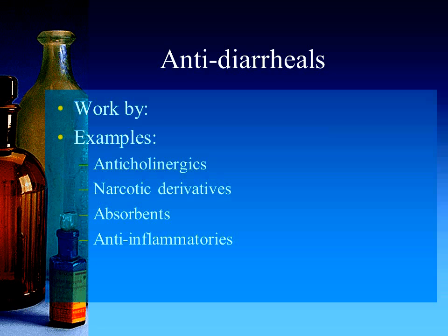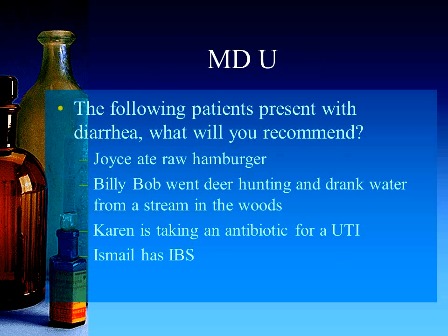The last anti-diarrheal category is anti-inflammatories, specifically for people who have conditions like Crohn's disease. A particular medication on the drug list called Asacol is prescribed specifically for the treatment of Crohn's disease — it helps decrease the inflammation in the intestines. Nine times out of ten that is not what we are treating, but for this chronic inflammatory condition Asacol is effective.